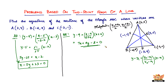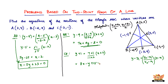Similarly, let us find the equation of median CF. That will be y + 1 = (7 + 1)/(−1 + 2) × (x + 2). Solving this, we get 8x − y + 15 = 0. So this is the equation of median CF.